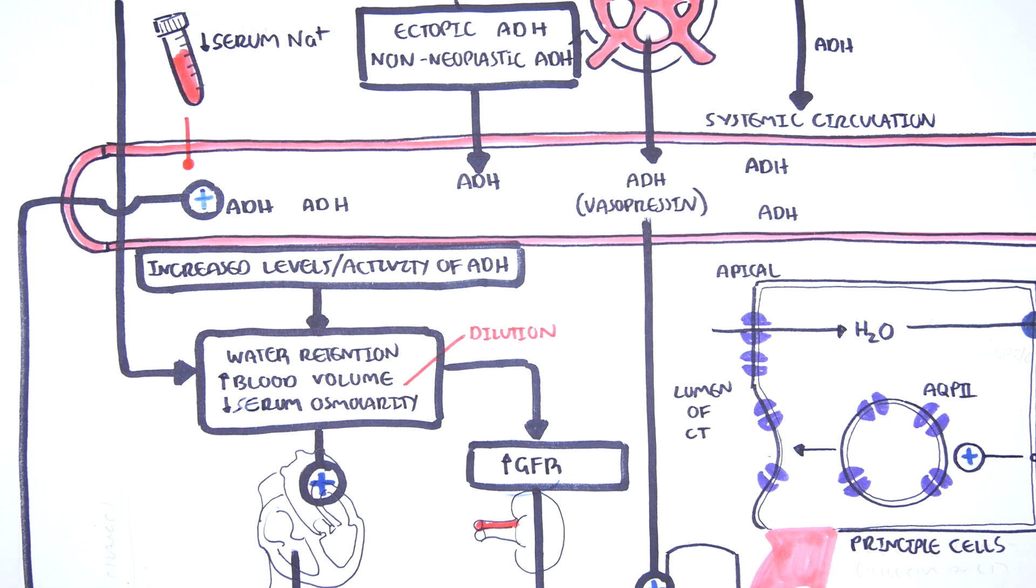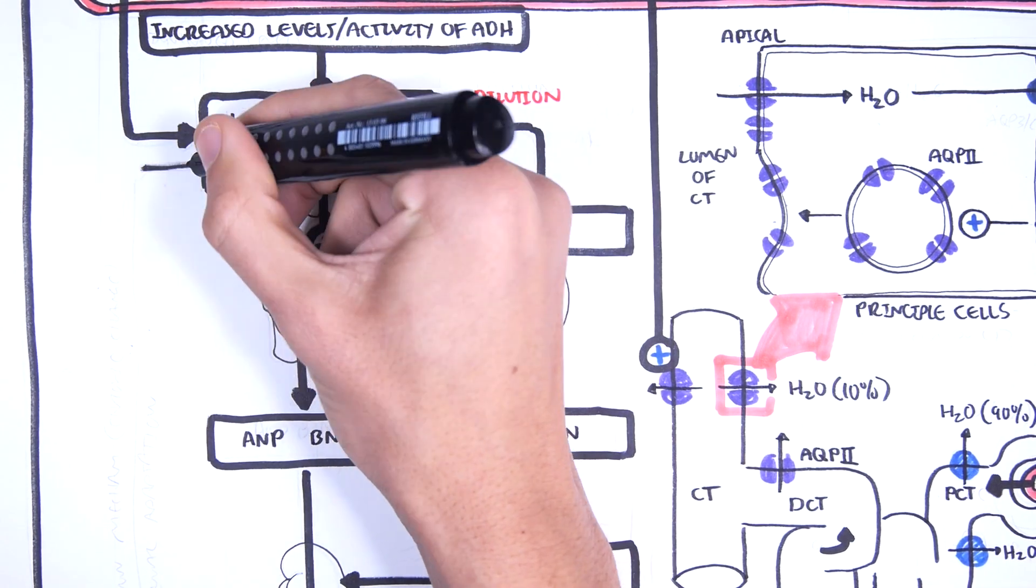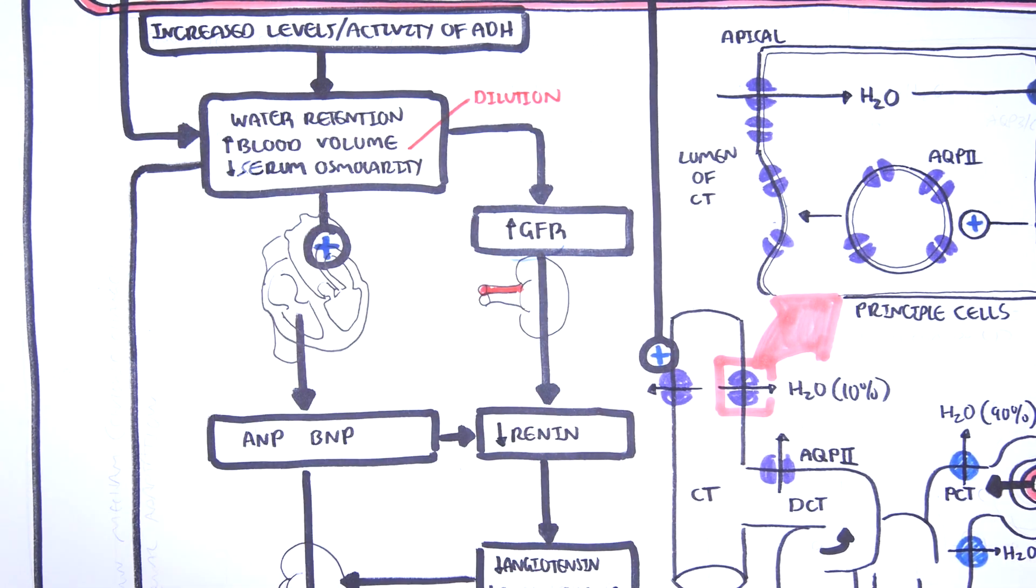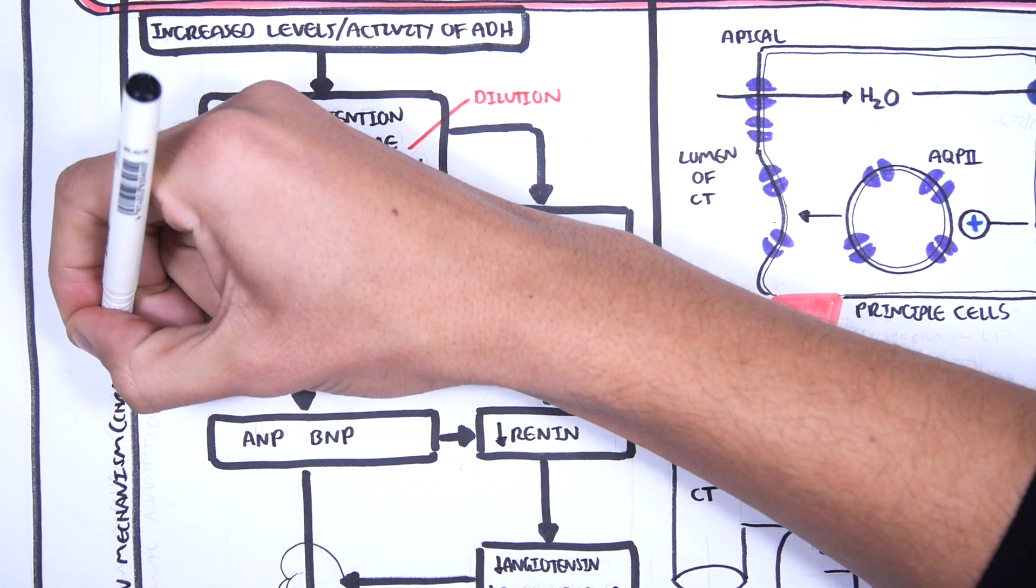This cycle continues. With more blood volume and decrease in serum osmolarity over time, through an unknown mechanism, the kidneys will eventually adapt.